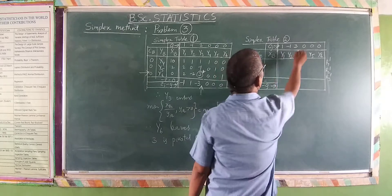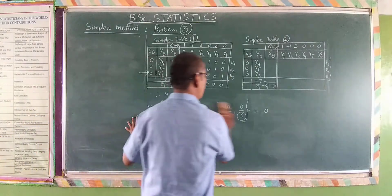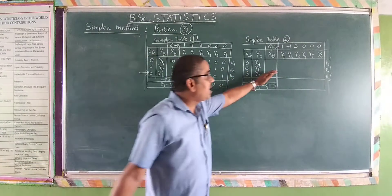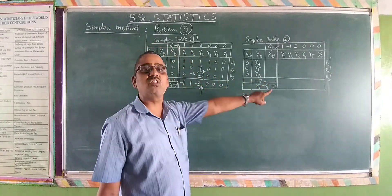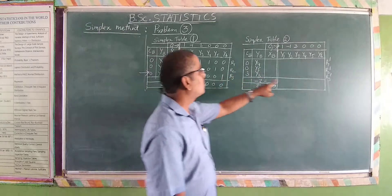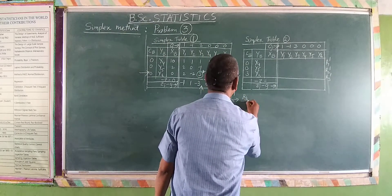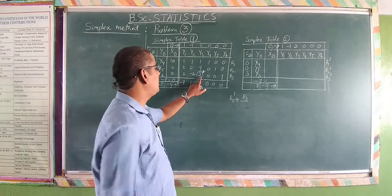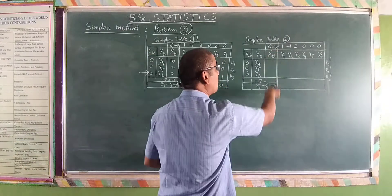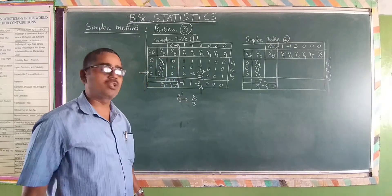Now proceeding with the operations. The principal element is in r3, so we do the operation for r3 dash first. r3 dash is r3 divided by 3, since we divide by the pivotal element itself, which is 3. This is the first operation.